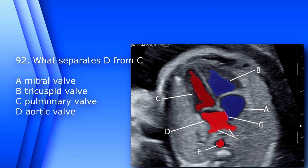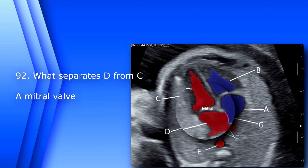Question 92. What separates D from C? A. Mitral valve. B. Tricuspid valve. C. Pulmonary valve. D. Aortic valve. The answer is A, mitral valve.